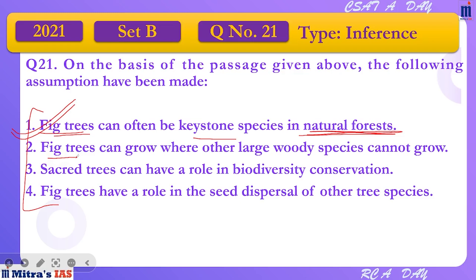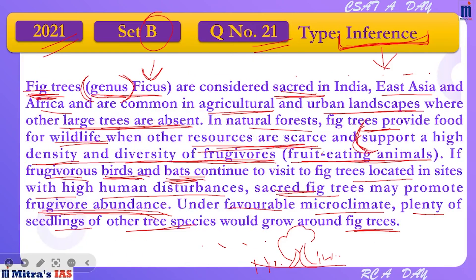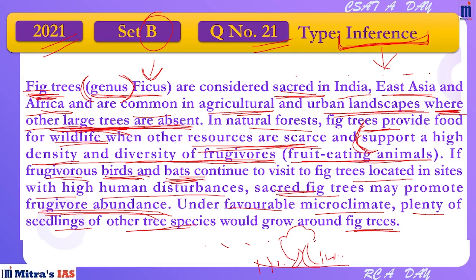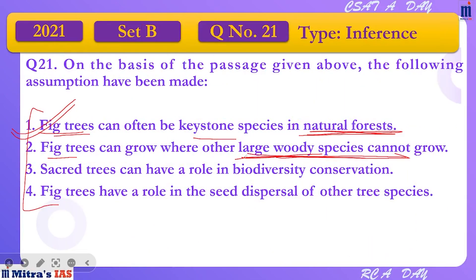Assumption 2: 'Fig trees can grow where other woody species cannot.' Let's see what the passage says — passage mein bola gaya tha ki India, East Asia, aur Africa mein paaya jata hai, and it is common in agriculture and urban landscapes where other large trees are absent. Can you see the word 'woody' here? No — it says 'large trees,' not 'large woody species.' So we will not go by the second assumption.